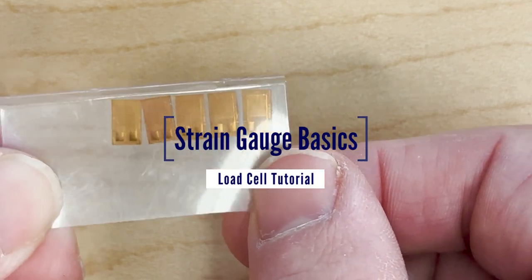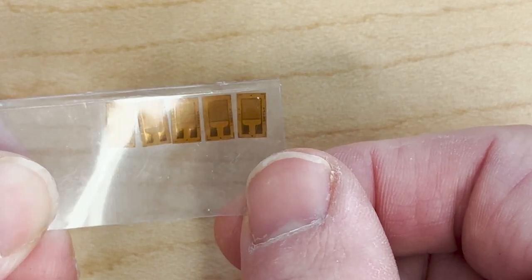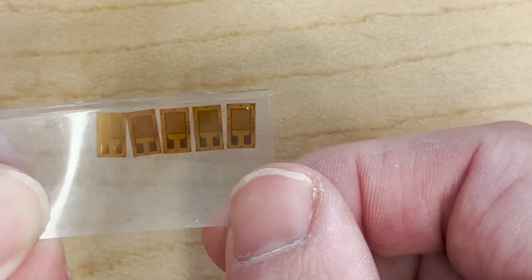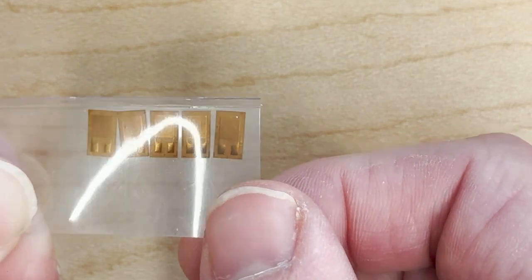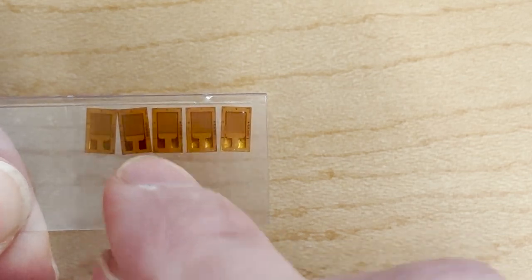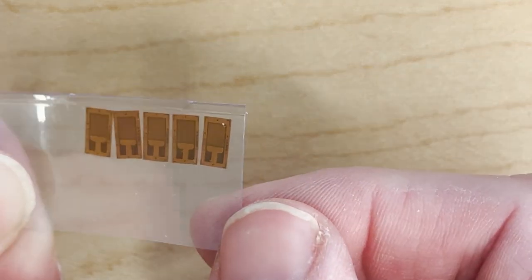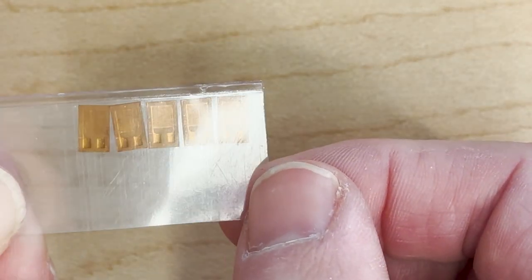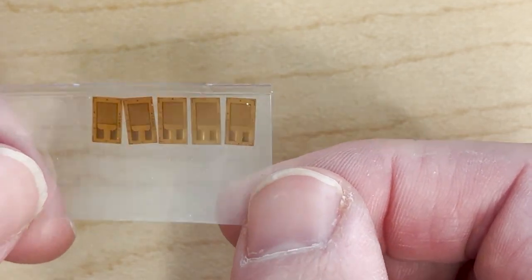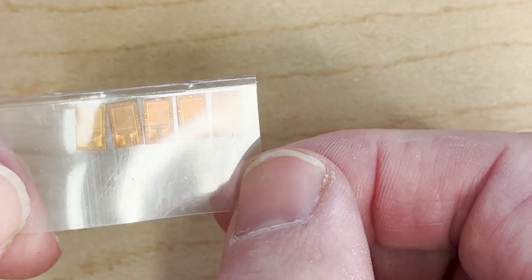Now we'll talk a little bit about strain gauges. These are strain gauges here and they work just like resistors. It's hard to see, but they're actually just coiled wire back and forth, and what they do is if they're bent in any way, the resistance changes.